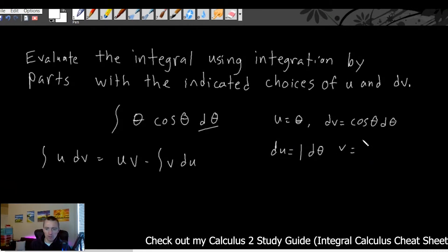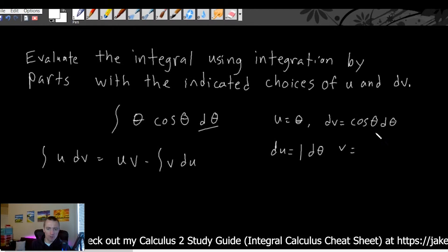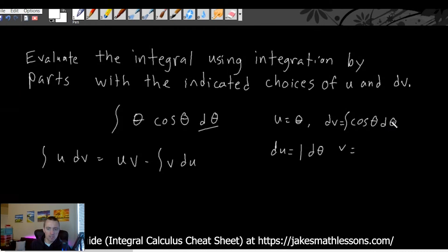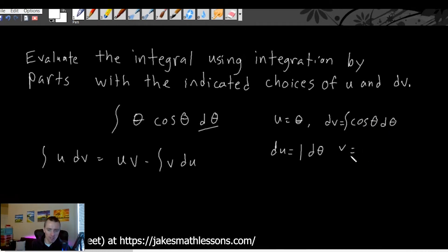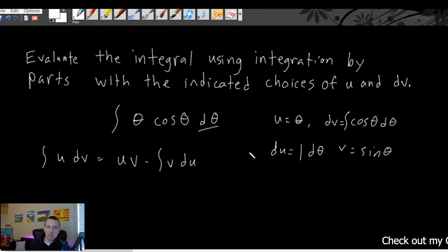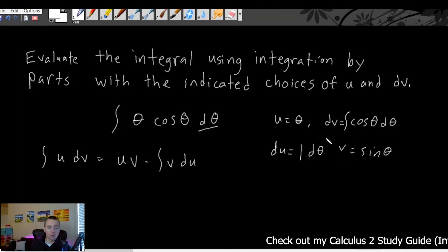To find v, we take the antiderivative of dv. The dθ tells us we're integrating with respect to theta, and it will fall off when we integrate. The antiderivative of cosine theta is sine theta, because the derivative of sine theta is positive cosine theta. So v equals sine theta. Now we have all four pieces: u, v, du, and dv.